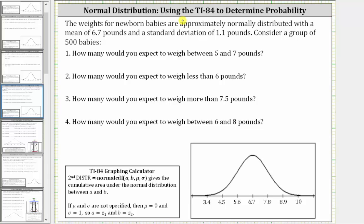The weights for newborn babies are approximately normally distributed with a mean of 6.7 pounds and a standard deviation of 1.1 pounds. I've already set up the graph below. Notice how we have the mean of 6.7 at the center of the distribution, and the horizontal axis is scaled by the standard deviation of 1.1.